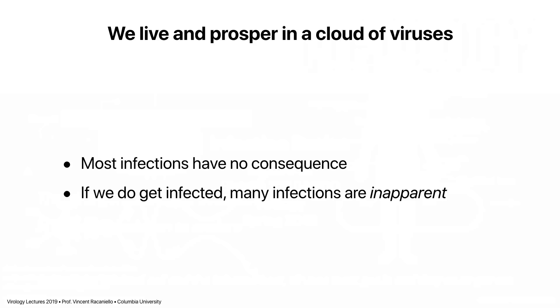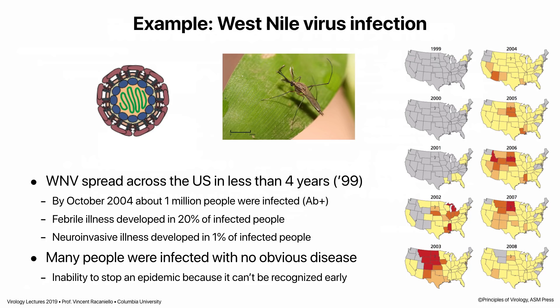On day one I said we live and prosper in a cloud of viruses. Most infections have no consequence for many of the reasons we talked about earlier. Today we'll introduce the concept of the inapparent infection. Most of us are infected, and in fact viruses are replicating in us — they're not just passing through. But we don't feel anything. It's called an inapparent infection. Few are the viruses for which there are no inapparent infections.